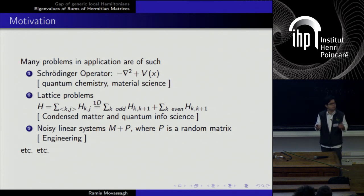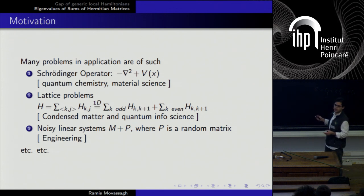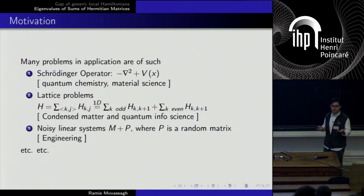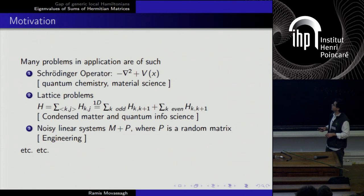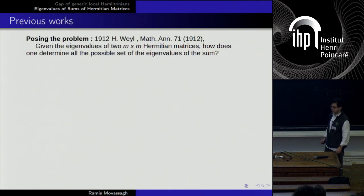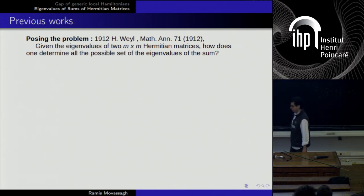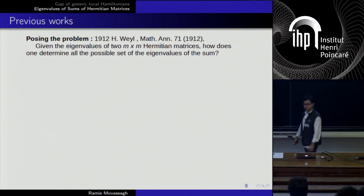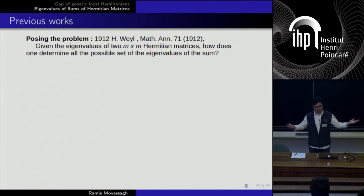On a spin chain you can write a local Hamiltonian as a sum of odd interactions plus even interactions. Everybody within each group commutes, so individually each group is easy. But when you put them together, because consecutive nearest-neighbor terms don't commute, they're not simultaneously diagonalizable and it becomes very difficult. This general question — if you have two matrices whose eigenvalues you know, what are all possible eigenvalues of the sum — was posed by Hermann Weyl in 1912. It gave rise to nice mathematics like Horn's conjecture, which gives an over-complete set of recursive inequalities. Horn's conjecture was promoted to a theorem by Klyachko, and cleaned up by Knutson and Tao. These all give you bounds on what the eigenvalues of the sum can be.